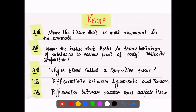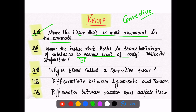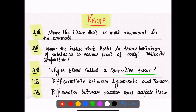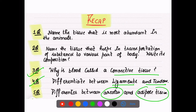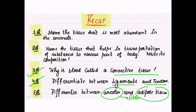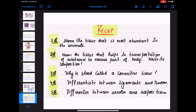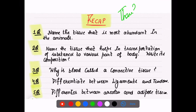Recapitulation: the tissue that is most abundant in animals is connective tissue. The tissue that helps in transportation of substances to various parts of the body is blood. Blood is called connective tissue because it connects different tissues and organs of the body. Ligaments are bone to bone; tendons are muscle to bone. Areolar tissue contains fibers; adipose tissue contains fat cells. We have completed our second tissue — connective tissue. Go through this lecture carefully, either in two parts.